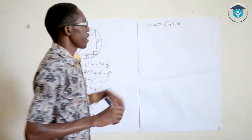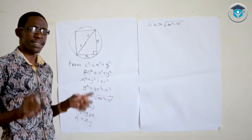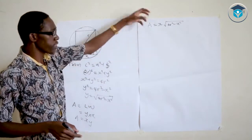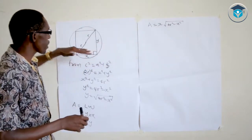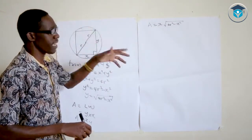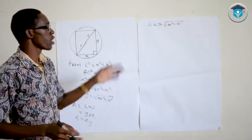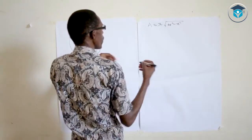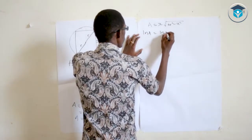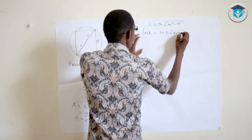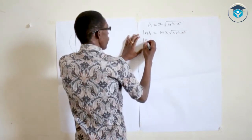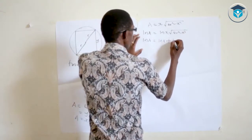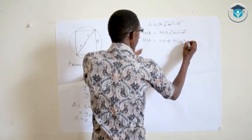To find the maximum area, we differentiate the area with respect to x. Our variable is x because x and y change, while the radius r is constant. I will introduce a natural log on both sides: ln(A) = ln(x · √(4r² − x²)), which simplifies to ln(A) = ln(x) + ½ · ln(4r² − x²).